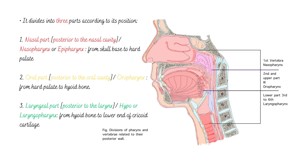It divides into 3 parts according to its position. First, the nasal part, with the extent from the base of the skull to the 1st cervical vertebra. Then the oral part, extending from the 2nd cervical vertebra to the upper part of the 3rd cervical vertebra. Then the laryngeal part, which extends from the lower part of the 3rd cervical vertebra to the 6th cervical vertebra.